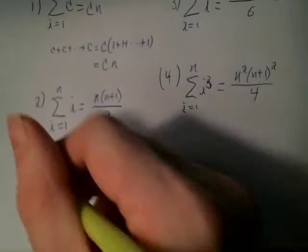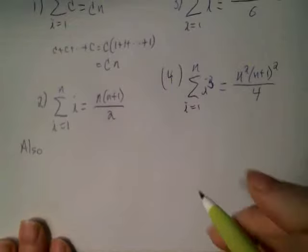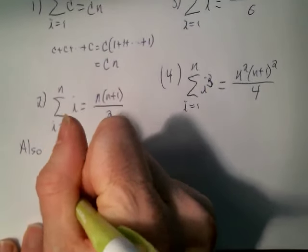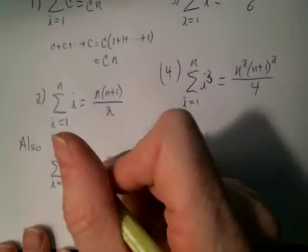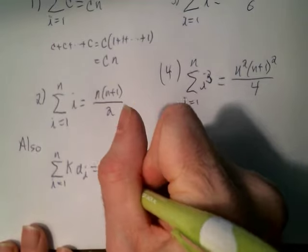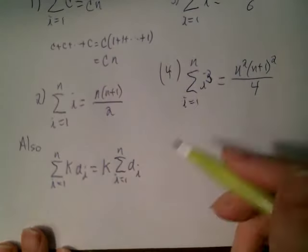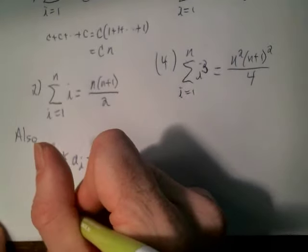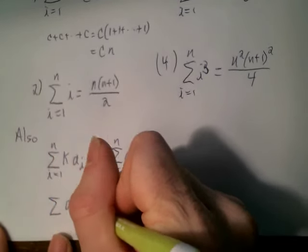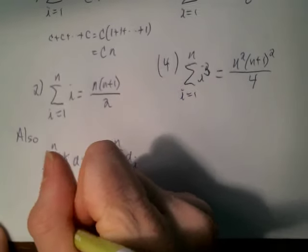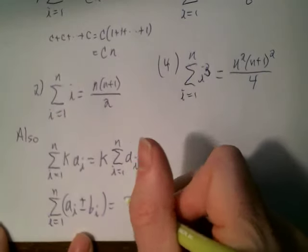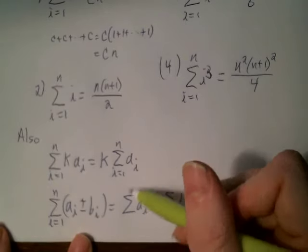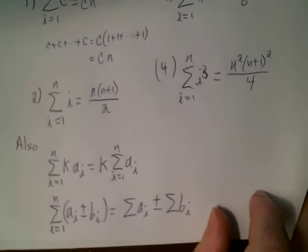Since we're dealing with finite sums, you can factor out constants — any GCFs. Later in calculus with infinite series you won't necessarily be able to do this, but for finite sums it works. Also, you can break up sums or differences into their own individual sums: the sum of (a_i ± b_i) equals the sum of a_i plus or minus the sum of b_i.